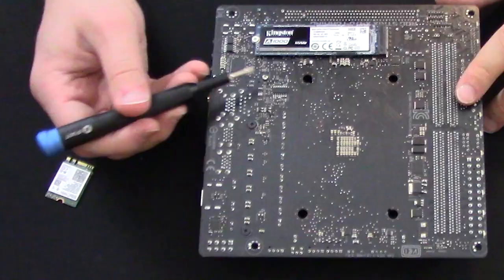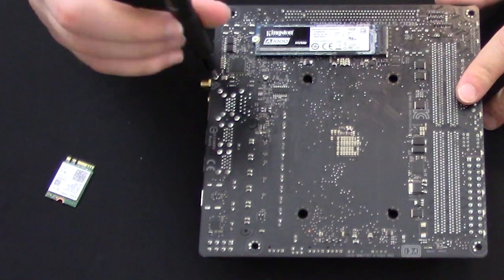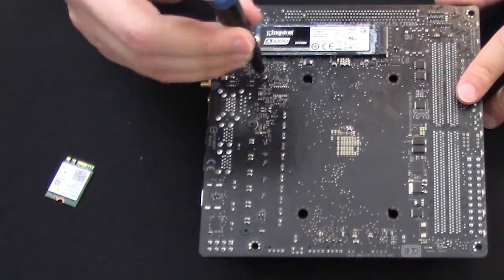Start by identifying and unscrewing the two screws on the back of your motherboard, and carefully remove the adapter out of the M.2 slot.